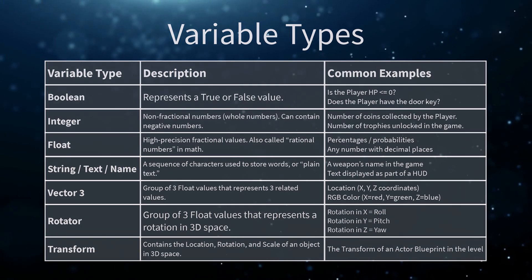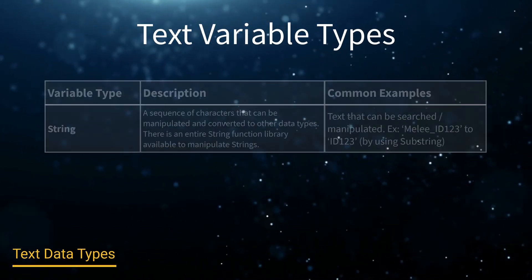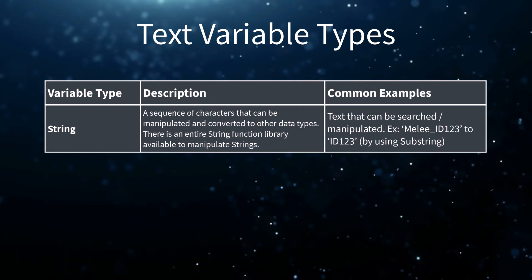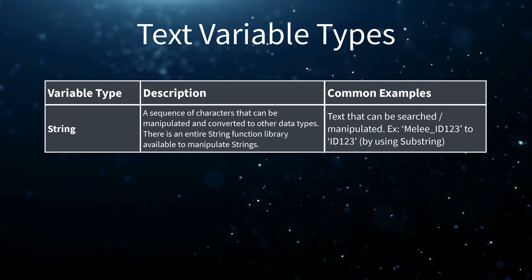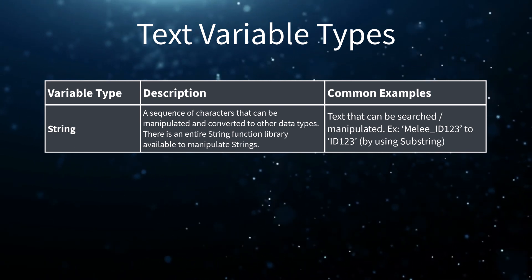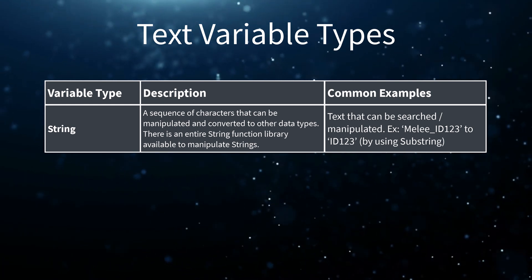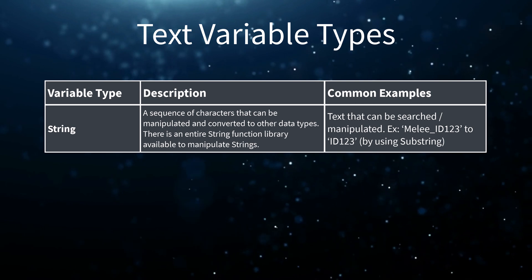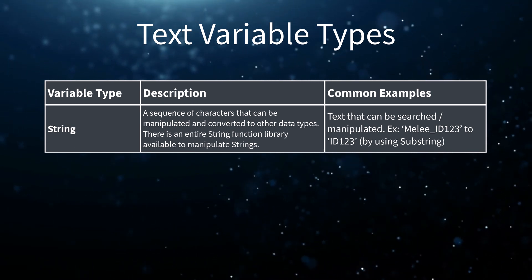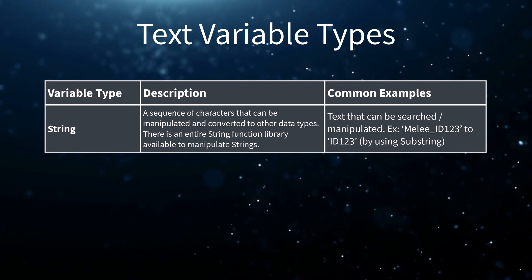Let's take a moment to look at the text variable types we saw earlier. First, we have the string. A string is a sequence of characters that can be manipulated and converted to other data types. There is an entire string function library available to manipulate strings. An example could be any text that can be searched or manipulated — for example, the text "Melee_ID123" can be converted into "ID123" for identification purposes by using the substring function.